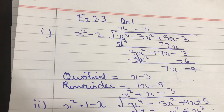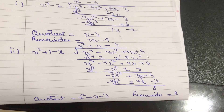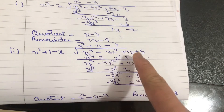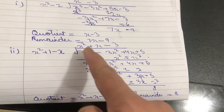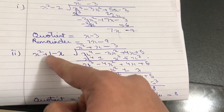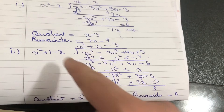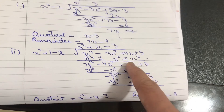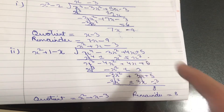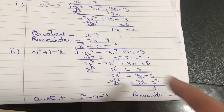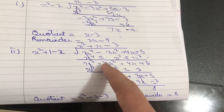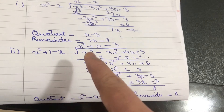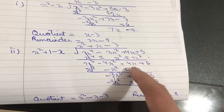Let's do another question to understand this better. Here we have x raised to 4 minus 3x squared plus 4x plus 5 divided by x squared plus 1 minus x. We divide the first terms: x to the 4 divided by x squared gives us x squared. Now we multiply it with the rest — x squared into 1 is x squared, and x squared into minus x gives minus x cubed. Since there is no like term for x cubed, we leave it at the side. Now we subtract, changing the sign of everything: x to the 4 minus x to the 4 is 0, and minus 3x squared minus x squared is minus 4x squared. We keep x cubed first as it has the highest degree, then write plus 4x plus 5.